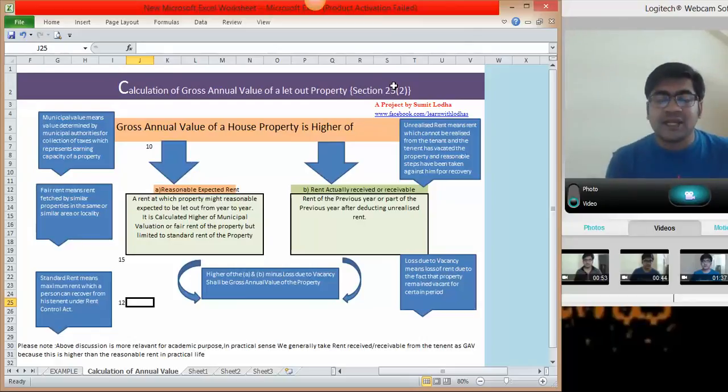You could not realize some of the rent, but this is very specific. There are four conditions which we will discuss in another tutorial. If the four conditions are satisfied simultaneously, then only you can get this deduction of unrealized rent from your rent actually received or receivable, otherwise you won't get any deduction. You have to take only rent of the previous year or part of the previous year.